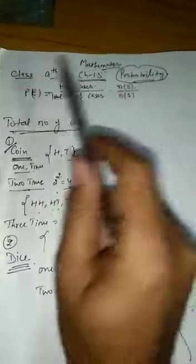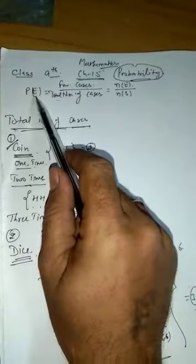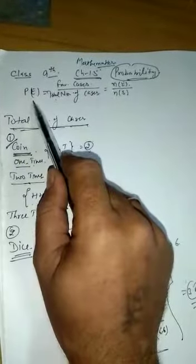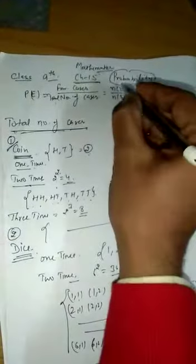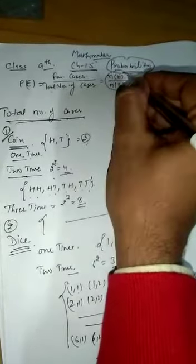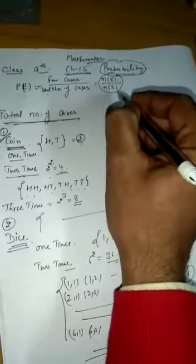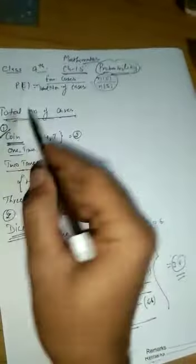Today we discuss the probability. The probability of any event is based on favorable cases by total number of cases. We denote the formula by n(E) by n(S). n(E) means number of favorable cases. n(S)—S stands for sample space—total number of cases. Today we discussed the total number of cases for coins.